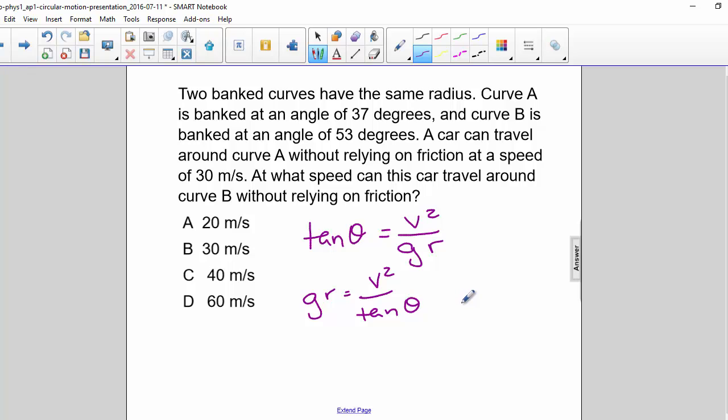Since both of these cars are subject to the same acceleration due to gravity, G, and they are both around the same radius, R, we know that GR is equal for both of them. Therefore, we can say V1 squared over tan theta 1 equals V2 squared over tan theta 2.